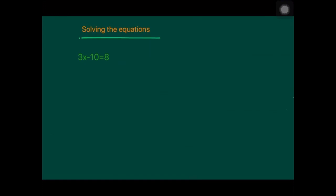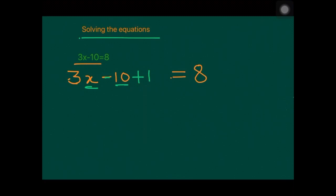Now we will see how to solve equations. Take 3x minus 10 equals 8. To find x, we leave the term with x on the left side and deal with the rest. Since we have minus 10, we add 10 to both sides. The minus 10 cancels out on the left and the right side becomes 8 plus 10, which equals 18. So now we have 3x equals 18.